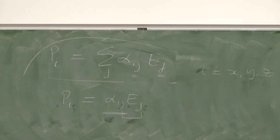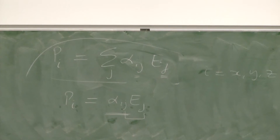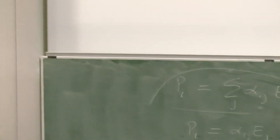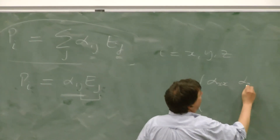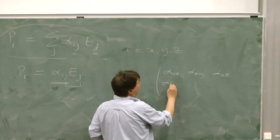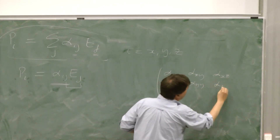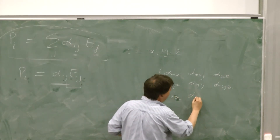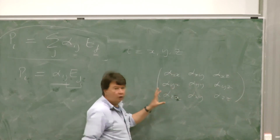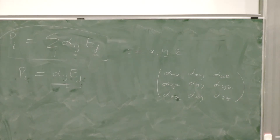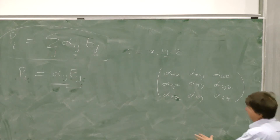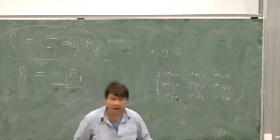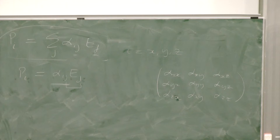When you write out alpha_XX, alpha_XY, alpha_XZ, alpha_YX, alpha_YY, alpha_YZ, alpha_ZX, alpha_ZY, alpha_ZZ — this looks like a matrix. But it's not just a matrix. The components have to transform into each other in a particular way when we change coordinate system. We know perfectly well that we might choose completely different X, Y, Z axes, and the real physics of the situation can't depend on our arbitrary choice of coordinate system.